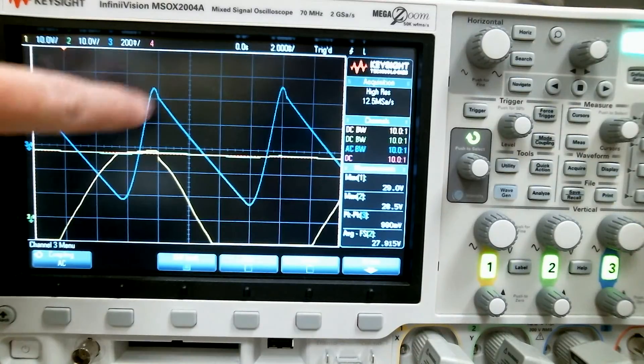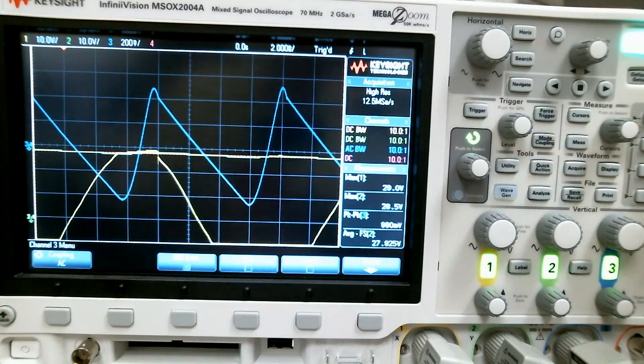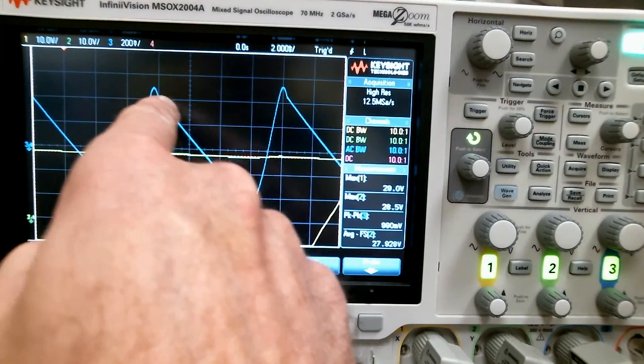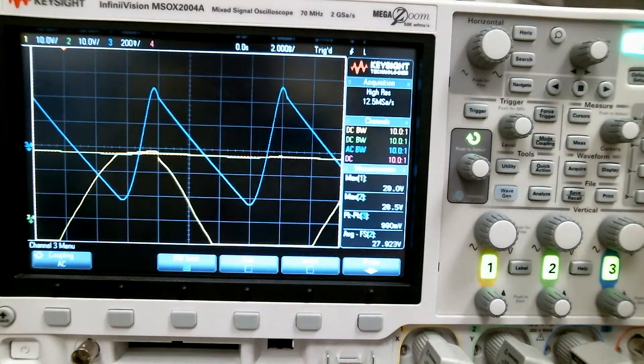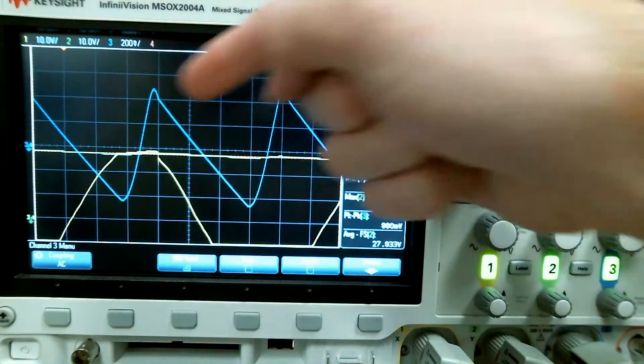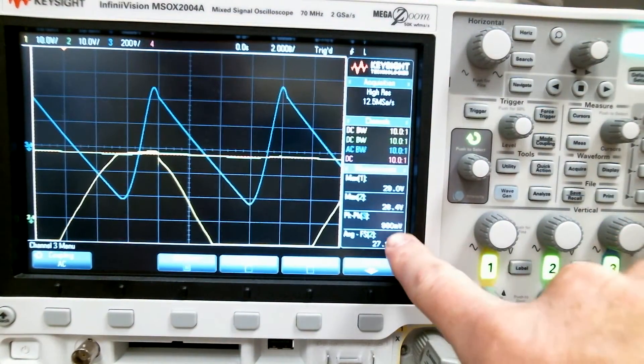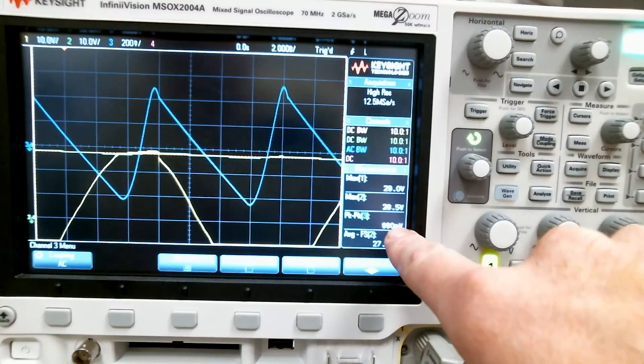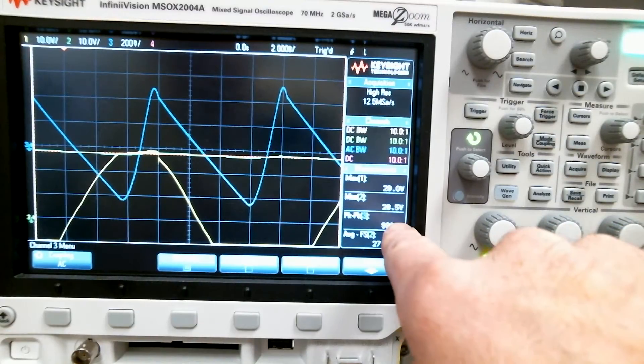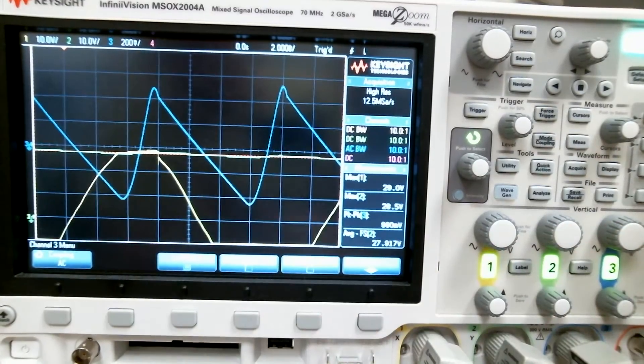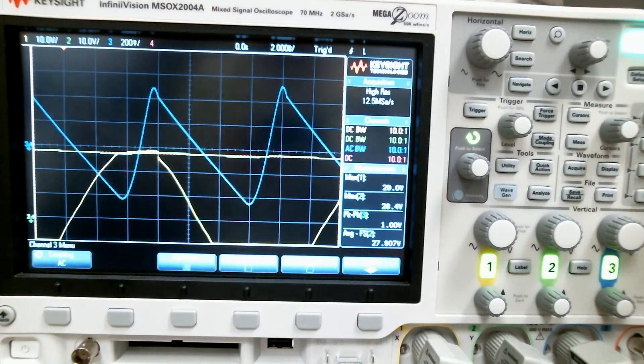This little blip here is reverse recovery time with the silicon diode - it's really interesting but not now. And then during this time it looks like a ramp, but it's really an exponential. This is the ripple that we're talking about. So my measurements were set up and we have 990 millivolts peak-to-peak. If I round up, call that one volt peak-to-peak.